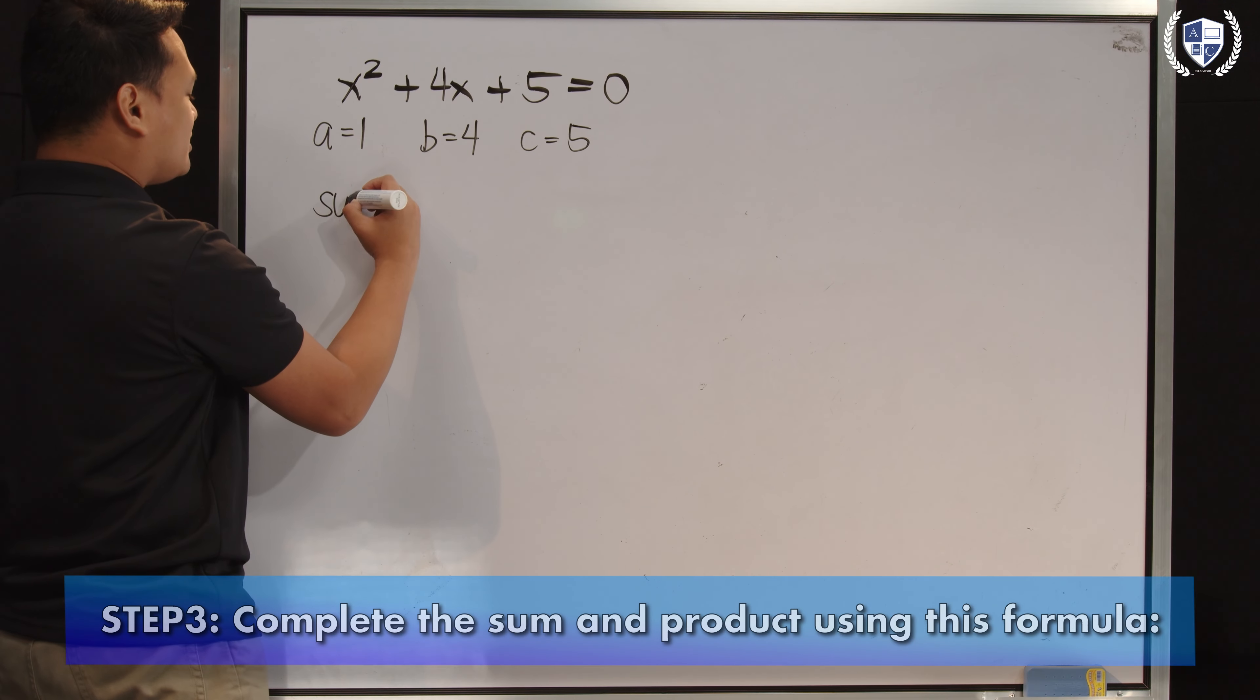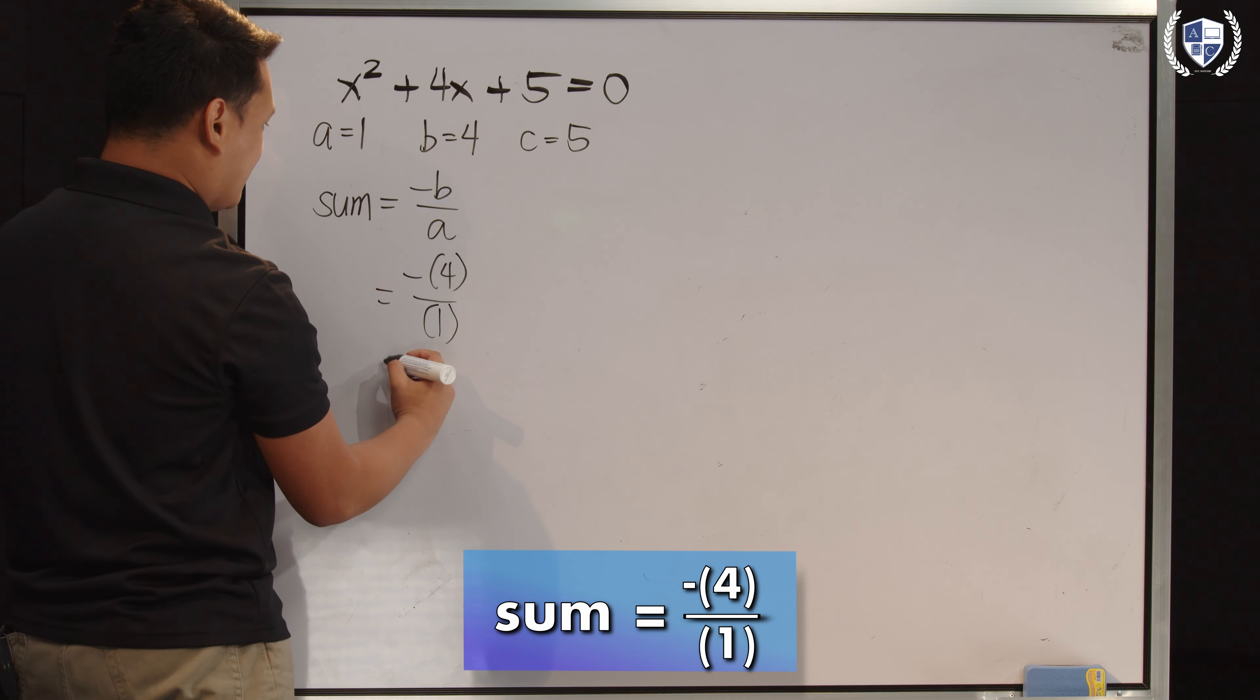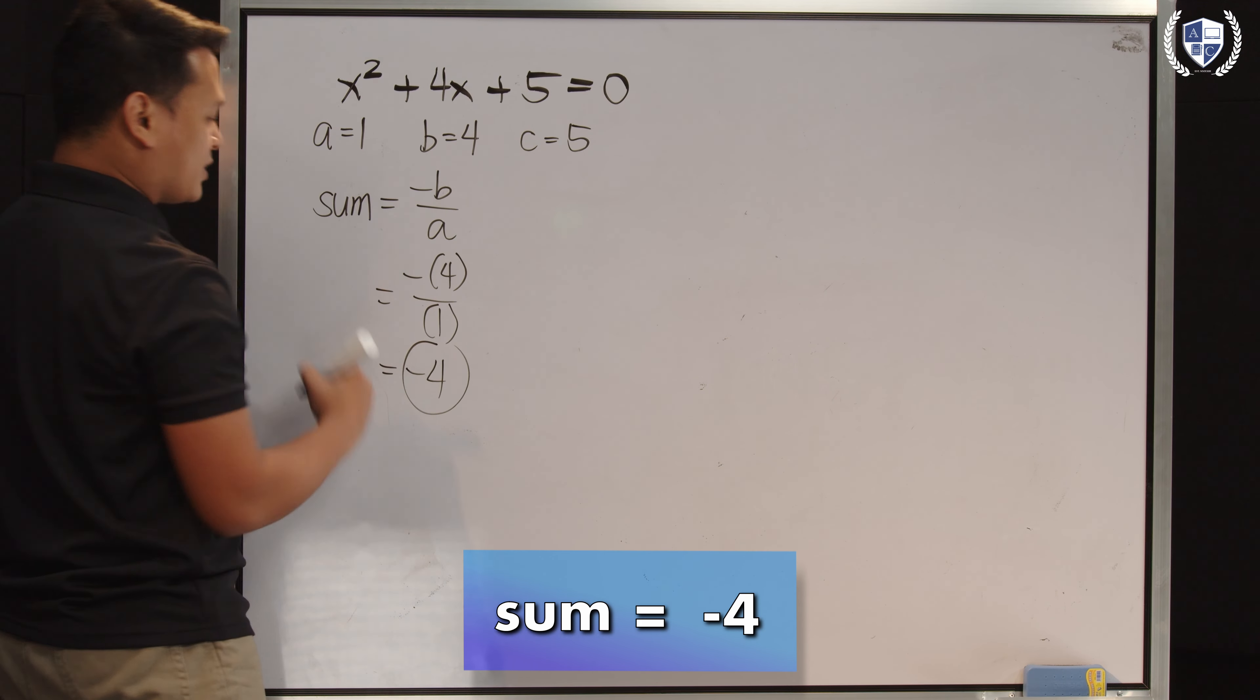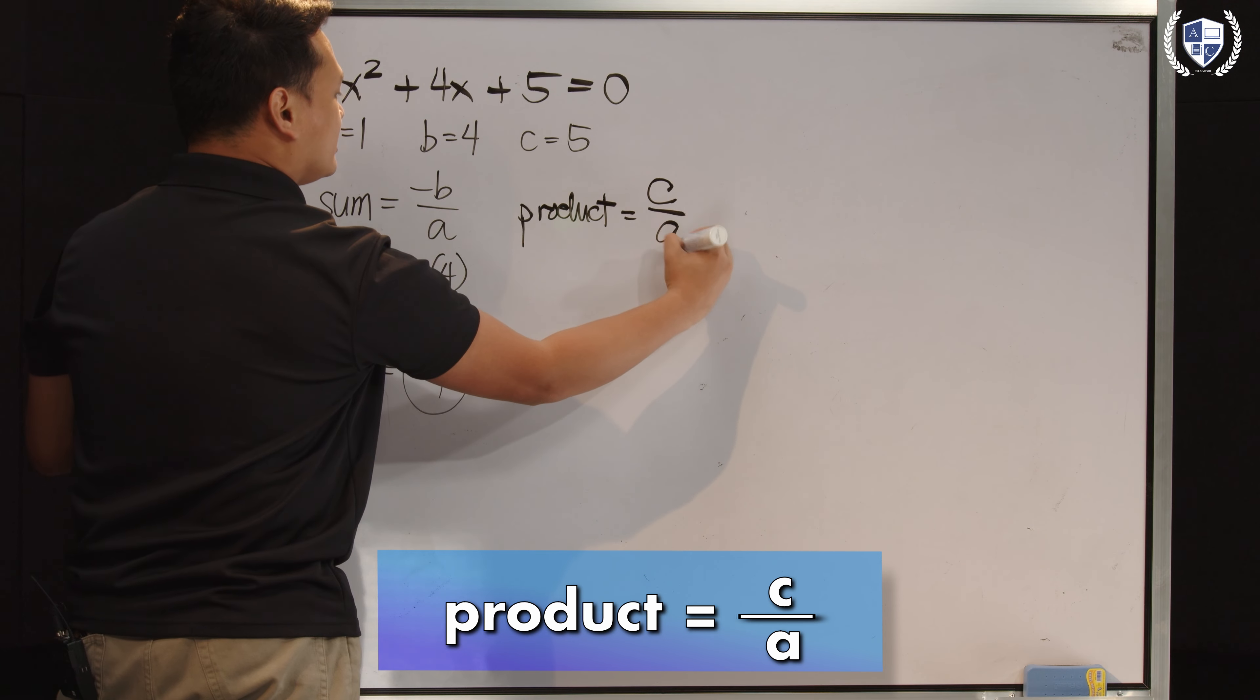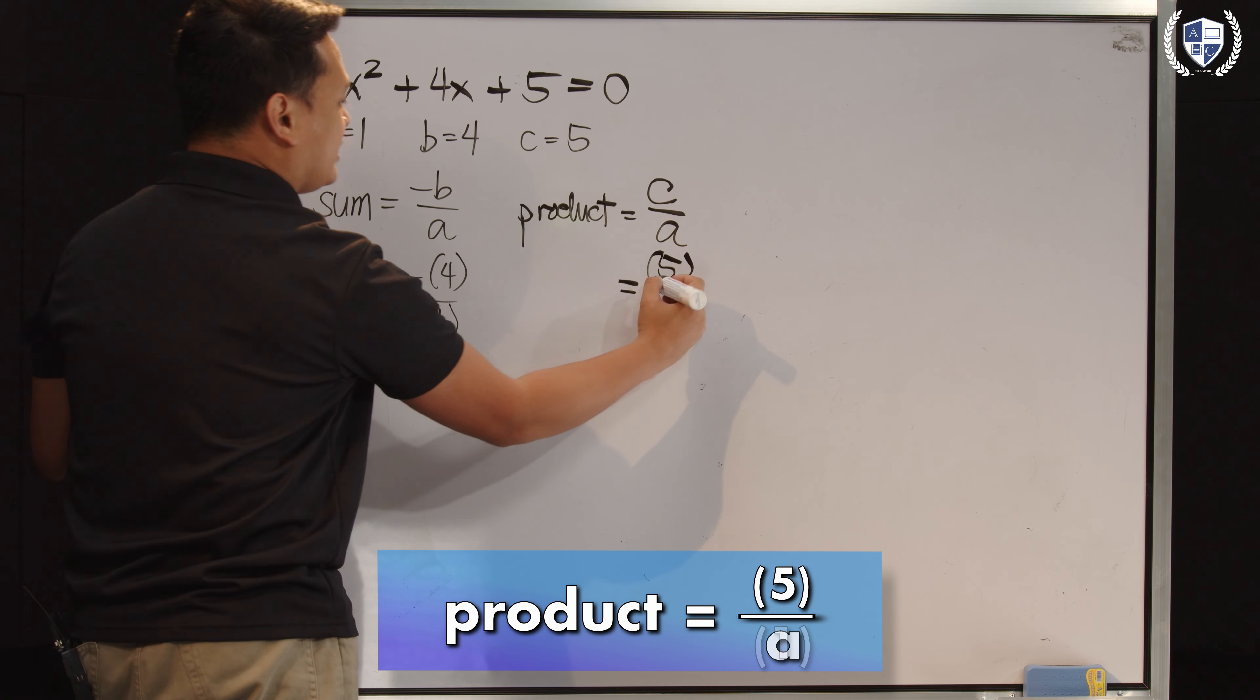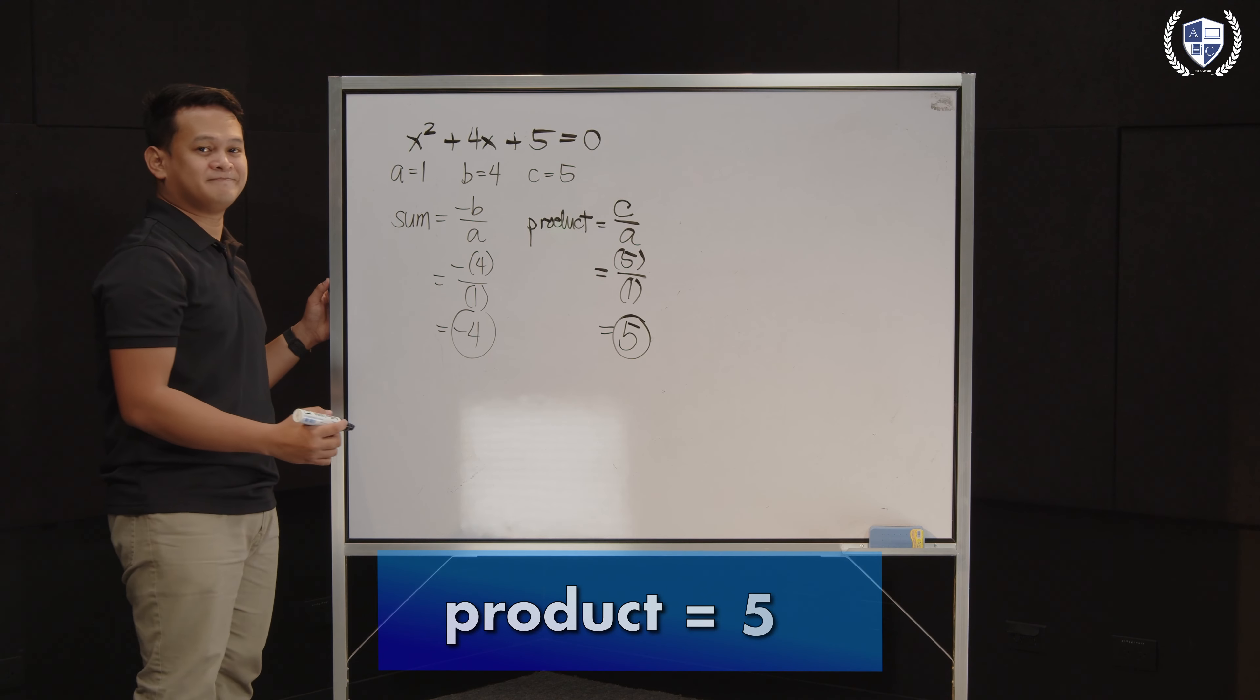And then para hindi kayo mahirapan, pwede nyo namang isulat yung formula ng sum. Sum is negative B over A, at palitan yung B ng value ni B, which is 4. Palitan si A ng value ni A, which is 1. So yung sum ng ating roots sa quadratic equation na ito is actually negative 4. Meron na tayong sum. What about the product? So for the product, product is given by the equation C over A. And ano yung value ng C natin here? It's 5. And the value of A is 1. So therefore, the product of the roots of this quadratic equation is 5.